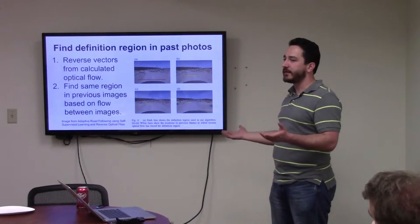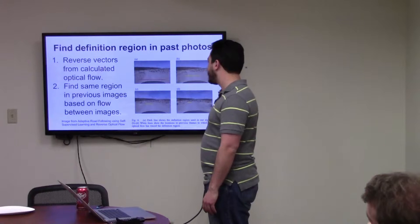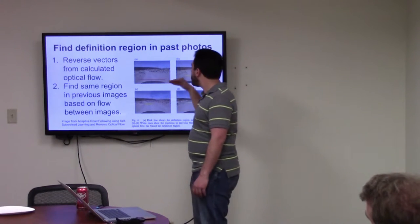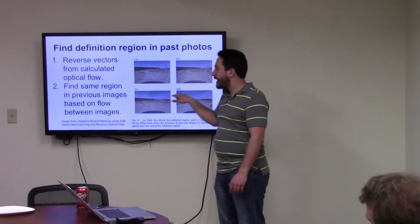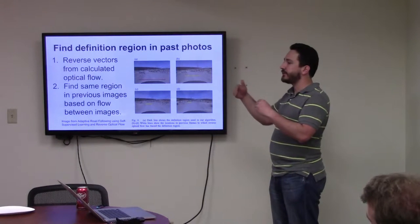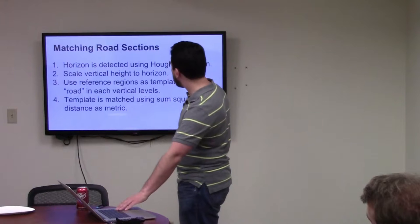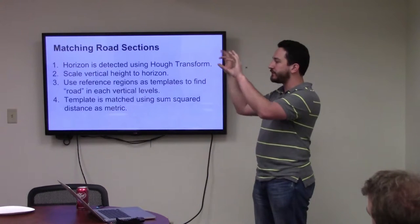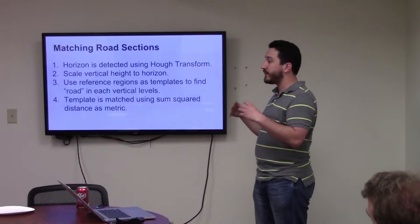Because then the next thing that they would do is they would define some location in the image as being the definition region, the region that they believe is a road based off of the fact that the vehicle was on it right now. So if you were in the vehicle, you would be over some spot right now. So it would look a couple seconds back and find that same spot that you're currently on in a previous picture. Now, if you're on something, that's probably a road.